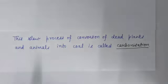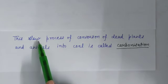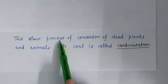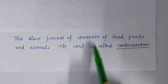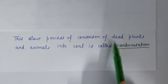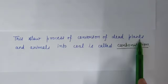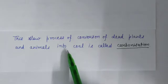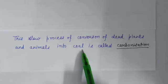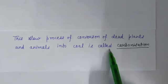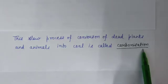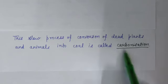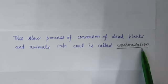The formation of coal is a slow process. This slow process of conversion of dead plants and animals into coal is called carbonization, because coal mainly consists of carbon.